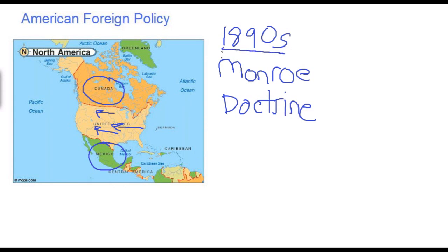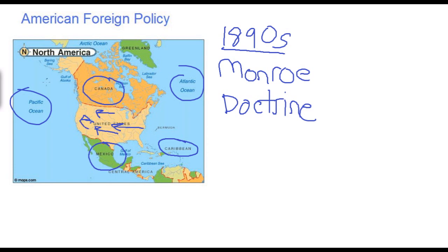Beginning in the late 1880s and 1890s, the United States grew more interested in issues in the Atlantic, the Pacific Ocean, and especially the Caribbean. We began to see a renewed focus shifting from western expansion across the continent to international expansion — into the Caribbean, the Atlantic, and the Pacific Oceans — for a number of reasons.